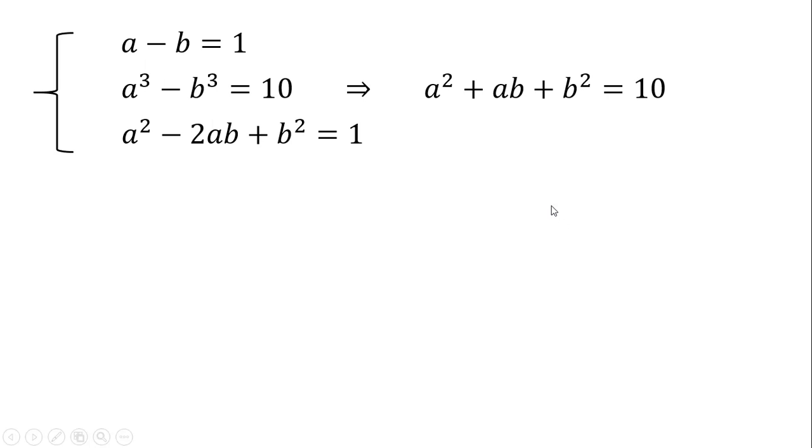Okay, now let us subtract these two equations to eliminate a squared and b squared. If we do this, we are left with 3ab in the left-hand side and 9 in the right-hand side. Dividing both sides by 3, we have the equation ab equals 3.